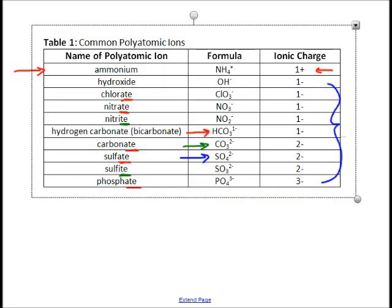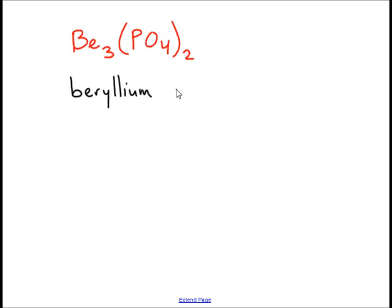One more example. I take a look at this - Be3(PO4)2. There's more than two elements present. I know it's not a normal binary ionic compound. This has a polyatomic in it. Be is found right on the periodic table, so I name the metal beryllium. But then I've got this PO4. What's PO4? The polyatomic. We go back to our list of polyatomics. PO4 is phosphate. So I'm going to name this beryllium phosphate.